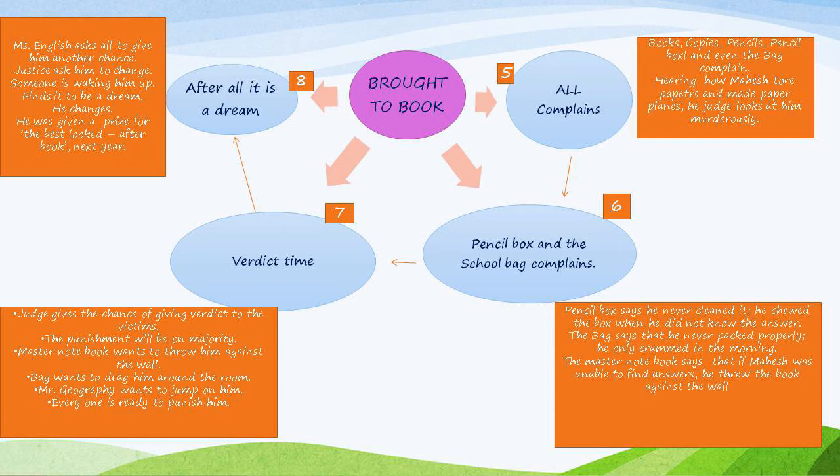Step 6: the pencil box and the school bag register their complaints. The master notebook also complains. The pencil box says he never cleaned it and that he chewed the box when he did not know the answer. The bag says he never packed it properly. He also threw the box against the wall.